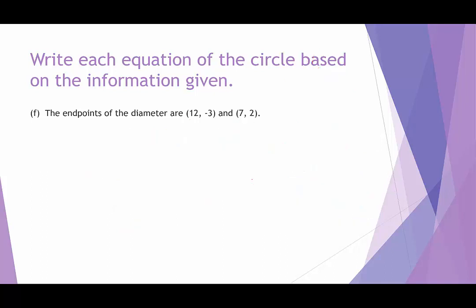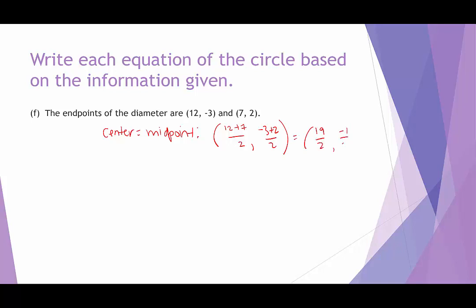Last but not least, we're again given two endpoints of a diameter. The center is found by the midpoint: adding the x-coordinates — 12 plus 7 — divided by 2, gives 19 over 2. Adding the y-coordinates — negative 3 plus 2 — divided by 2, gives negative 1 over 2. I'll leave them as improper fractions since that'll be easier for the calculation ahead.